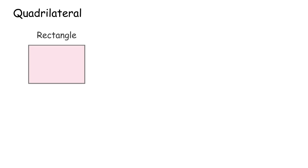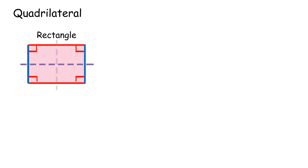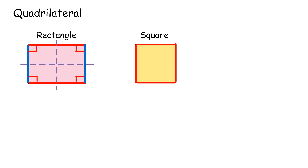Rectangle: the opposite sides are parallel and of equal length, all interior angles are 90 degrees, the diagonals are of equal length and bisect each other, and it has two axes of symmetry. Square: all sides are of equal length, opposite sides are parallel, all interior angles are 90 degrees, the diagonals are equal and are perpendicular bisectors of each other, and it has four axes of symmetry.